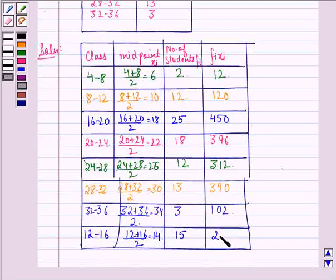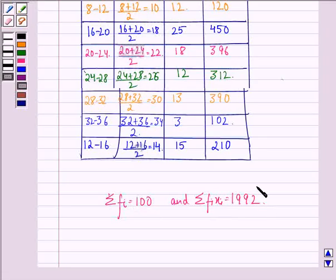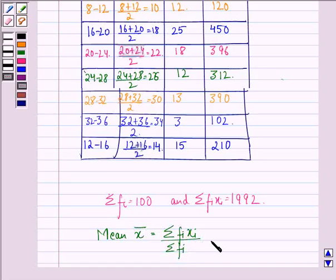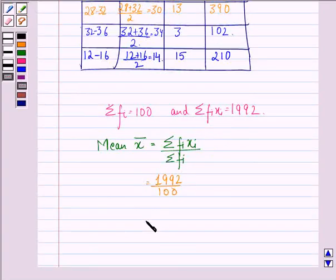So fi times xi for class 12 to 16 equals 210. The summation of fi equals 100 and the summation of fi times xi equals 1992. Therefore, the mean — denoted by x̄ — equals summation of fi·xi divided by summation of fi, which gives 1992 divided by 100, equal to 19.92. This is our answer.